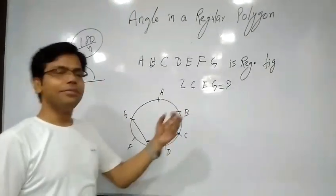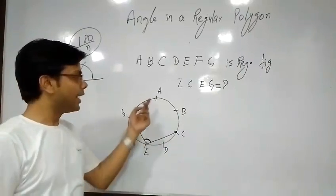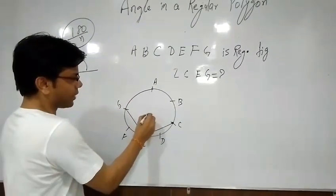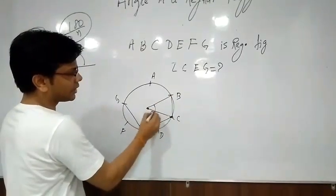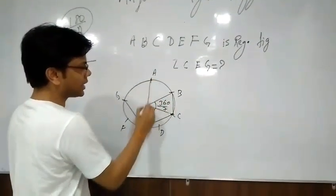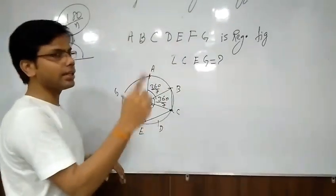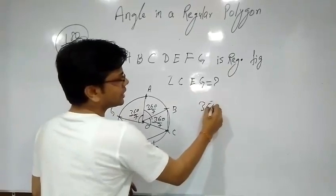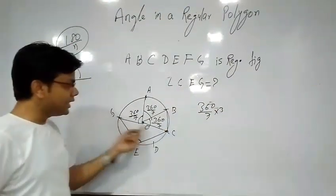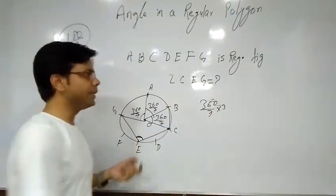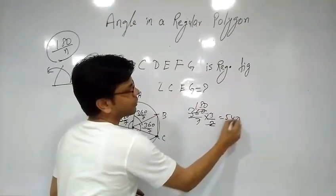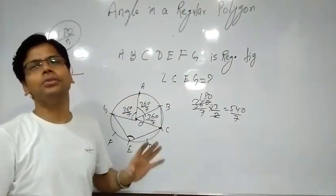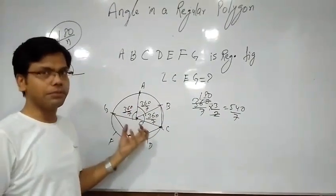Now let's verify this with geometry. If the figure is a regular polygon, we can plot it on a circle. A, B, C, D, E, F, G — a heptagon plotted on a circle. We need to find angle CEG. Let O be the center. Each adjacent pair, like B-C, makes a center angle of 360 by 7. Similarly each arc is 360 by 7. So the total center angle from G to C spans 3 arcs, which is 360 by 7 into 3. The perimeter angle is half of that: 180 by 7 into 3, which is 540 by 7. That is the solution by geometry. For regular figures, we don't need full geometry — we just count the gap and solve directly, and that is the best way.